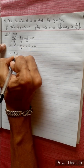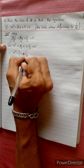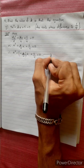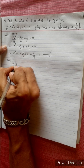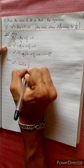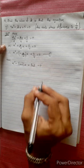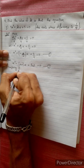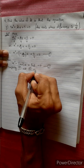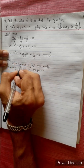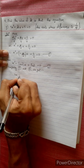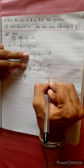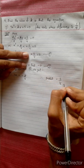Now, x² plus k by 4 times x plus 5 by 4 equals 0. This can be rewritten as x² minus k by 4 times x plus 5 by 4 equals 0 — this equation has minus, minus, plus. Now, x² minus (sum of roots) times x plus (product of roots) equals 0. This is equation 2. Let's compare equation 1 and equation 2. We get: sum of roots equals minus k by 4, and product of roots equals 5 by 4.